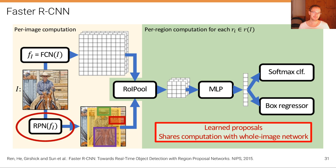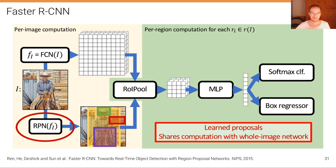The next evolution of this family of two-stage detectors is called Faster RCNN. Note that this all happened within a very short period of time — all these extensions are quite simple and happened within about one year. Faster RCNN works differently: instead of using a generic region proposal mechanism with classical methods, it uses learned proposals by computing proposals through a network that shares computation with the whole-image network.